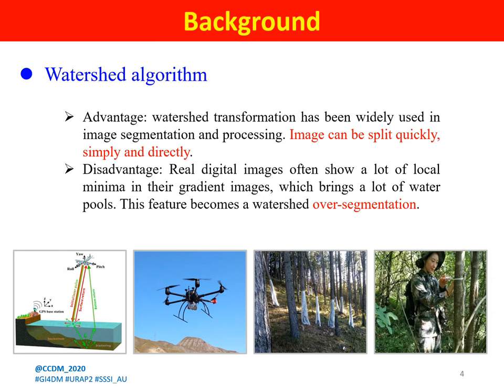On the other hand, real digital images often show a lot of local minima in their gradient images, which brings a lot of spurious results. This causes the watershed algorithm to produce over-segmentation.